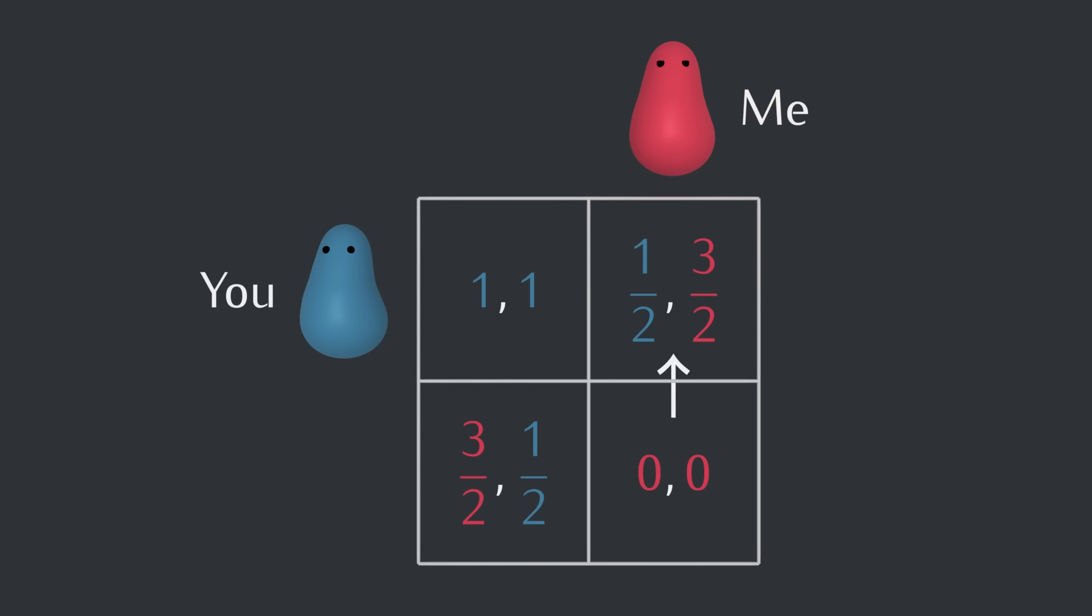Discretion is the better part of valor here. Let's record this by drawing an arrow. If we're in the right-hand column because I'm playing hawk, the situation in the upper right square is the best you can do.